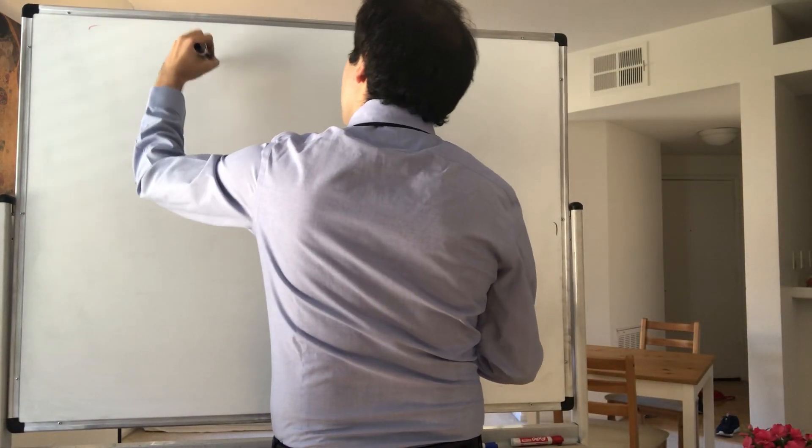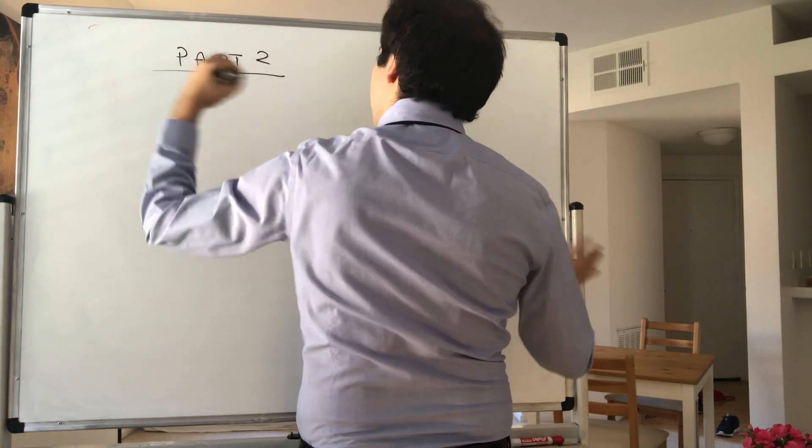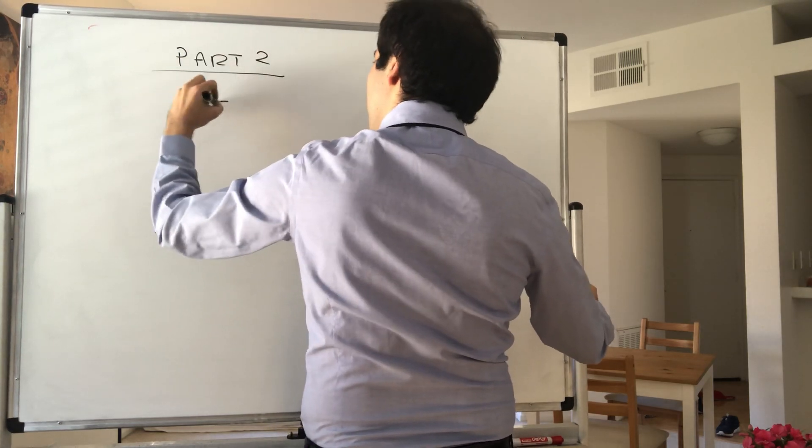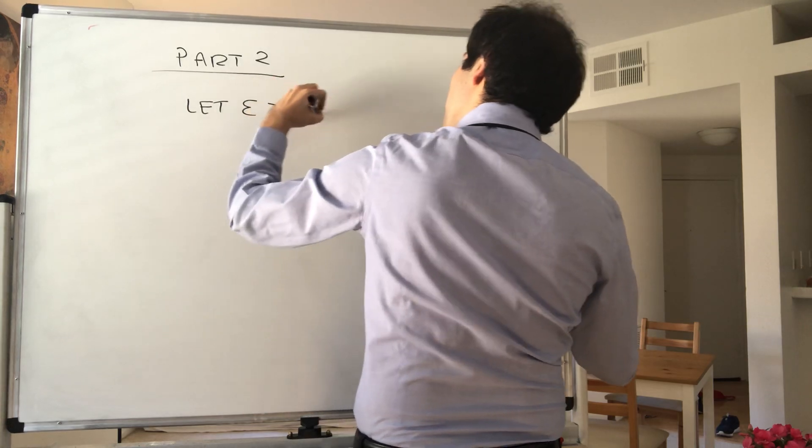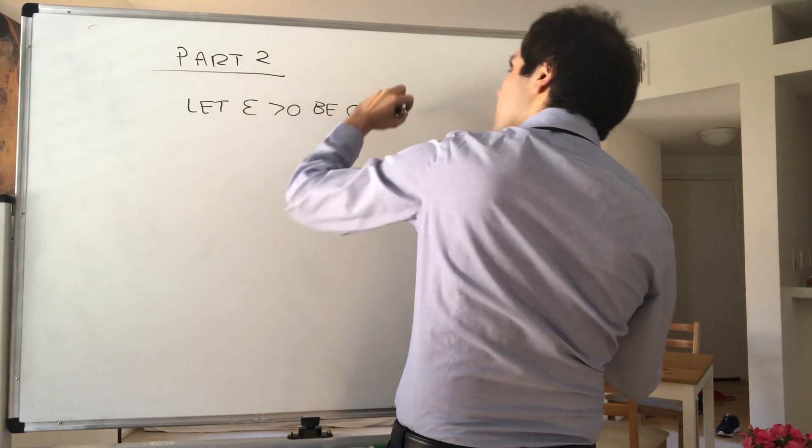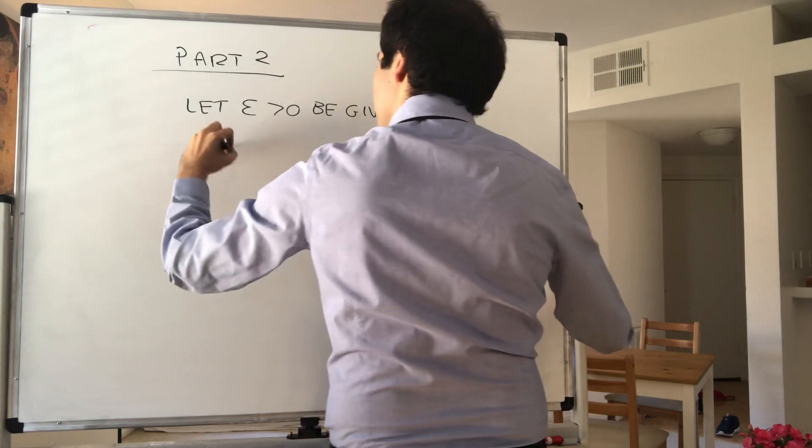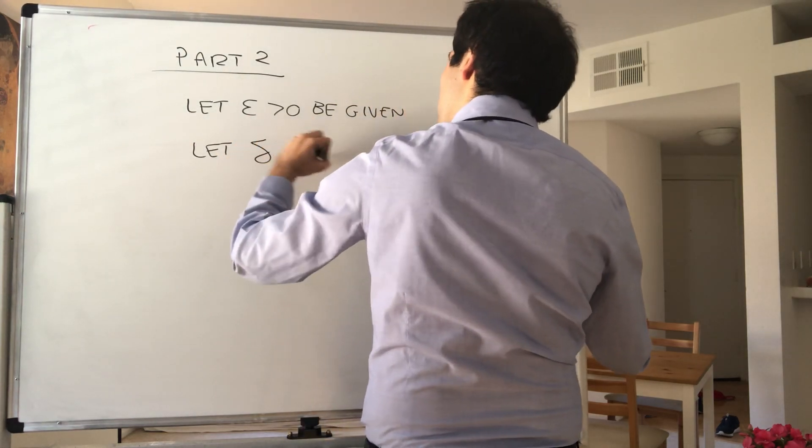So part 2, actual proof. So let ε > 0 be given. And then let δ = ε/6.